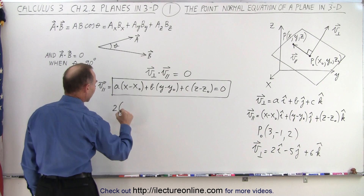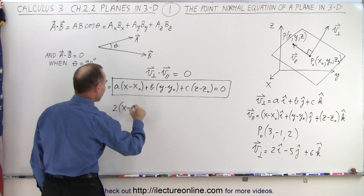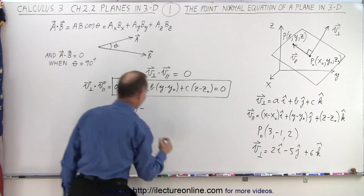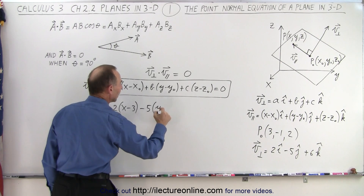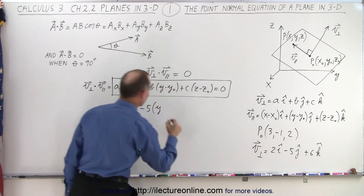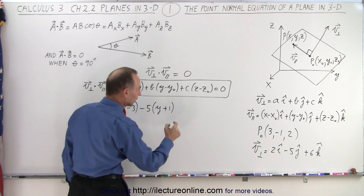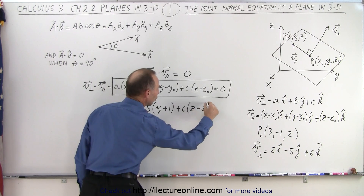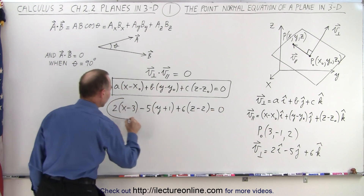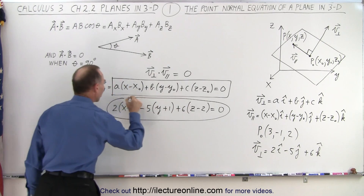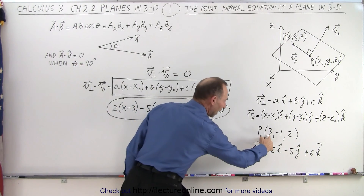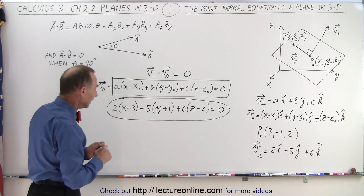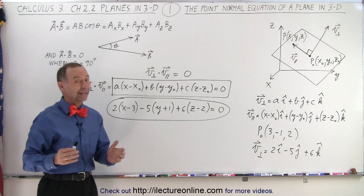So we take a, which equals two, times (x minus x-naught, which is three). Then b is negative five, so that becomes minus five times (y minus y-naught, but y-naught is negative one, so that's y plus one). And c is six, so plus six times (z minus two), and that is equal to zero. So this would be the equation of the plane having this point on the plane and this perpendicular vector, and this is the equation in numerical format. And that is how it's done.